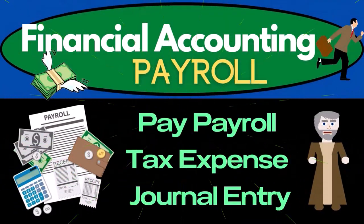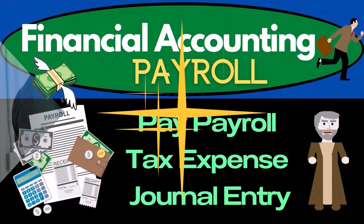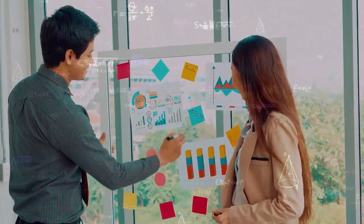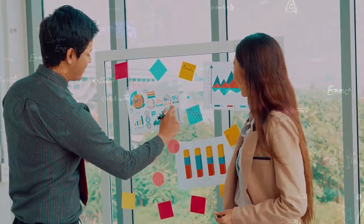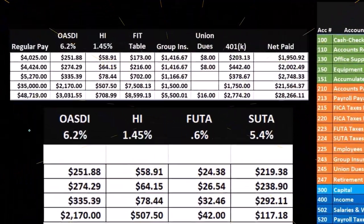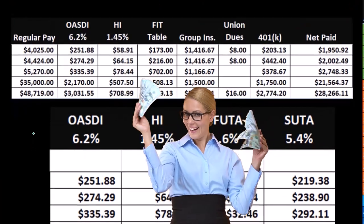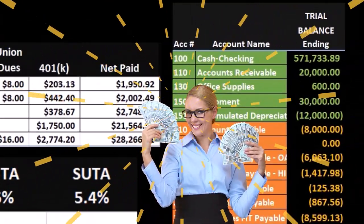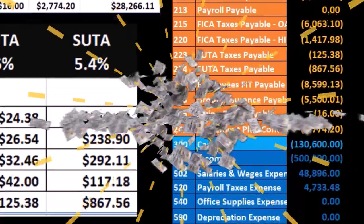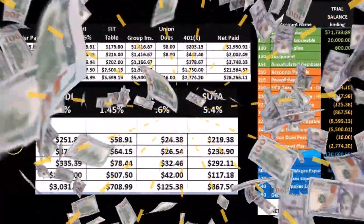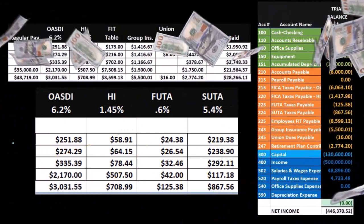In this presentation, we will enter a journal entry related to the payment of payroll taxes. Before this point, we have recorded payroll taxes for both the employee and employer portion. Now we're going to work on the payment of those payroll taxes. The recording of the employee and employer portion of payroll taxes came from the register as well as a worksheet for the employer portion.